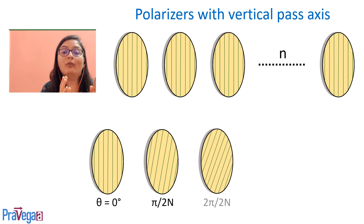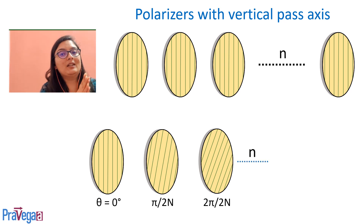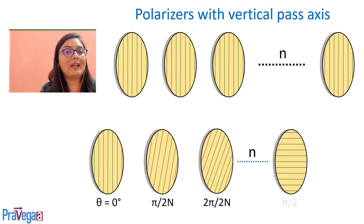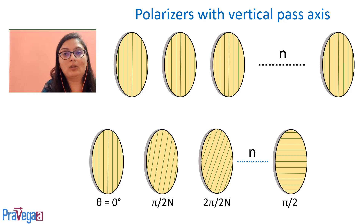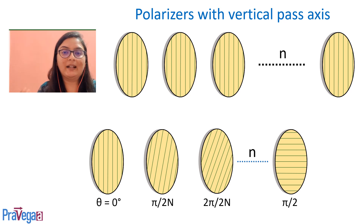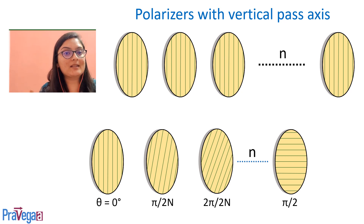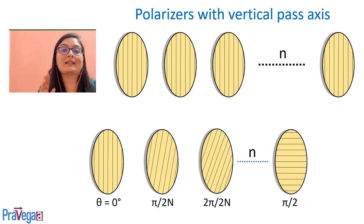The second polarizer will have an angle of 2π/2n with respect to the zeroth polarizer. When we reach the nth polarizer, it will have an angle of nπ/2n. Since n cancels, the remaining angle is π/2 — meaning the last polarizer's pass axis is rotated by 90 degrees.